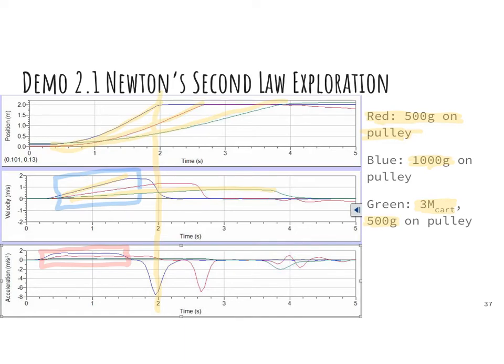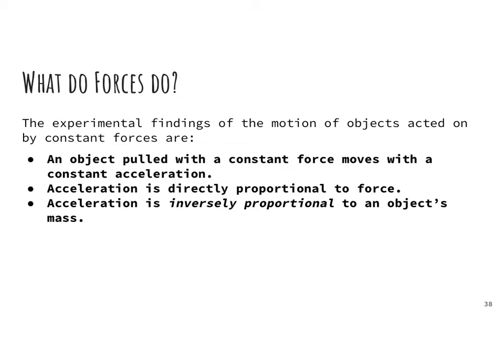We're going to take a look at a formula that relates all these concepts together. To give a quick recap, we know that an object that is pulled with a constant force moves with constant acceleration. But then we said, how do we affect these things? And we found experimentally that acceleration is directly proportional to force. So if I increase the force, I will also increase the acceleration. We found that by hanging a greater mass.